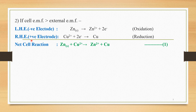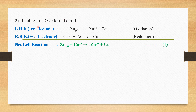If we add together these two half-cell reactions — the oxidation half-cell reaction and the reduction half-cell reaction — we get the net cell reaction: Zn(s) + Cu²⁺ → Zn²⁺ + Cu. This is the net cell reaction when cell EMF is greater than the external EMF and current is flowing through the circuit.